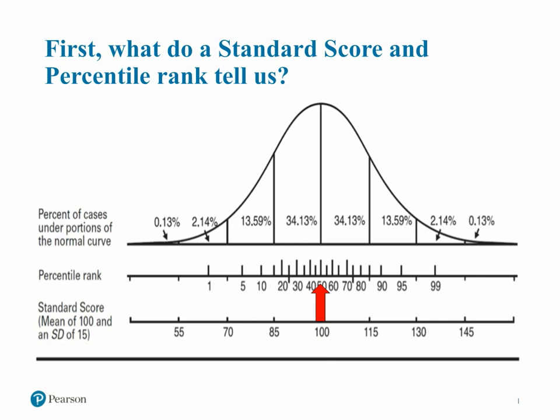Percentile ranks are easy to interpret as an estimate of an examinee's performance on a single test. You can think of percentile rank as the percent of same-aged peers that an examinee scored better than, but it shouldn't be used to compare performance against two different tests or on the same test at different times. The reason is because percentile ranks aren't on an equal interval scale. As you can see here in this normal curve distribution, the difference between standard scores of 100 and 115 represents 34% of the population, while the difference between standard scores of 115 and 130 only represents about 13.5% of the population.